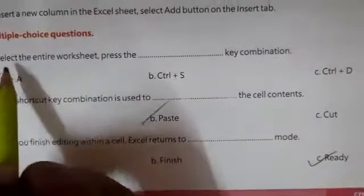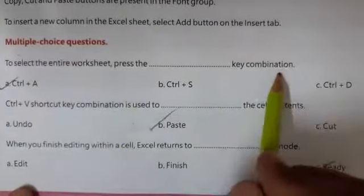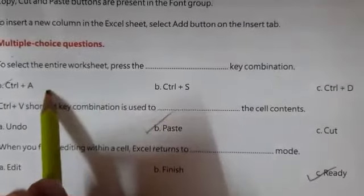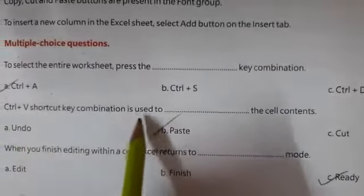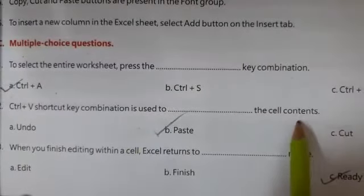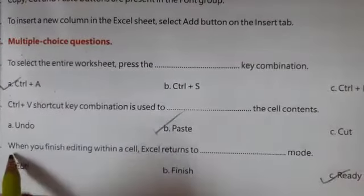Question 1: To select entire worksheet, press the key combination. It is Ctrl plus A. Answer is A. Second, Ctrl plus V shortcut key combination is used to paste the cell content. It is paste.